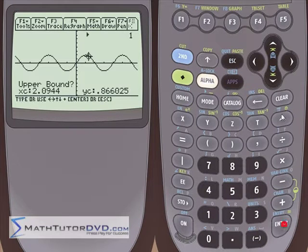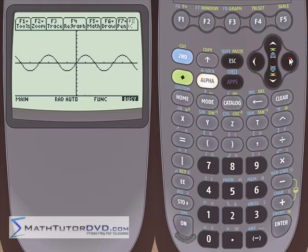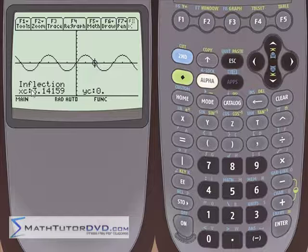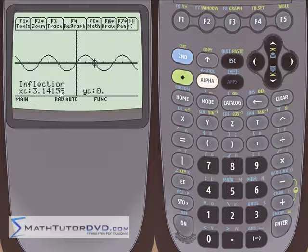So pick a point to the left and pick a point to the right and hit enter. It'll think for a second and calculate and put the cursor exactly at this inflection point which is at x equals 3.14159.